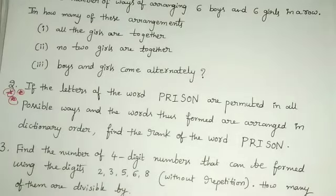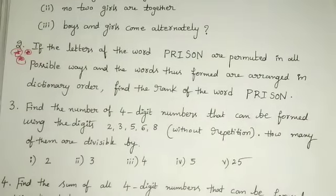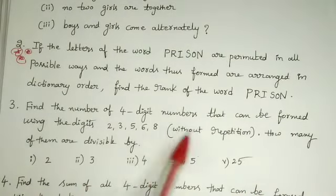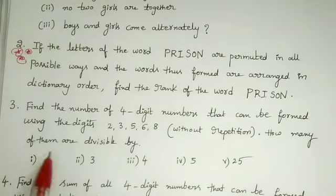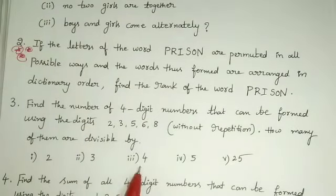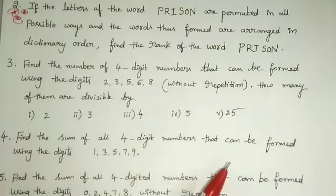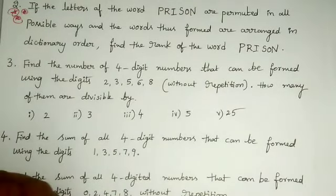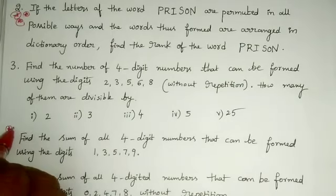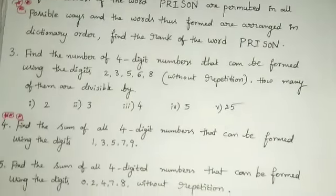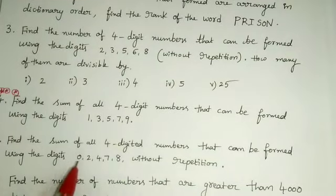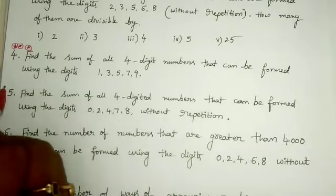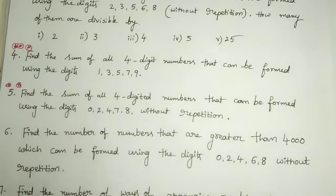Next one: if the letters of the word PRESENT are permuted in all possible ways and the words are arranged in dictionary order, then find the rank of the word PRESENT — a very very important model, definitely expected in the examination. Next: find the number of four-digit numbers that can be formed using 2, 3, 5, 6, 8 without repetition. How many of them are divisible by 2, by 3, by 4, by 5, by 25? Next: find the sum of all four-digit numbers that can be formed using 1, 3, 5, 7, 9 — very very important 4-mark question. Next: find the sum of all four-digit numbers that can be formed using 0, 2, 4, 7, 8 without repetition — very very very important model. Next: find the number of numbers greater than 4000 which can be formed using 0, 2, 4, 6, 8 without repetition.